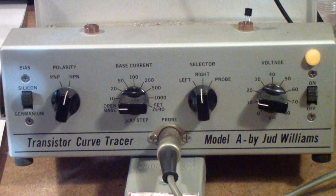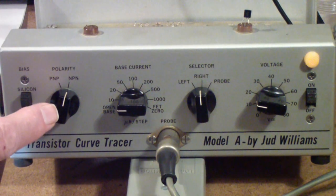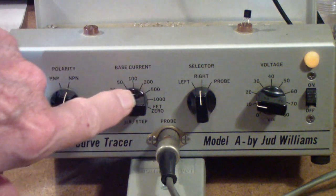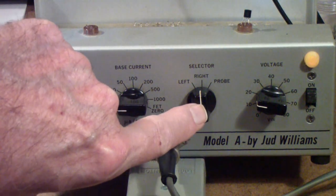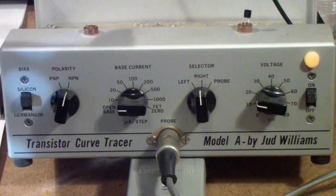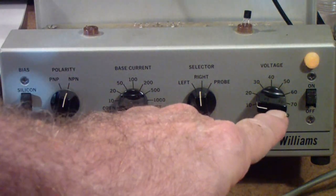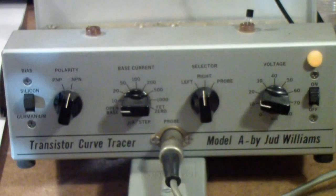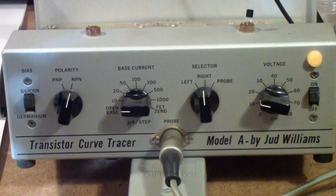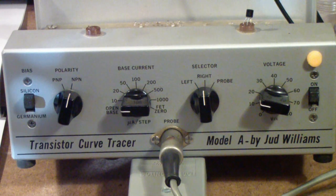Here is the front panel of the unit. You'll notice that on the left it has a silicon-germanium switch, and I'll talk about that again in a minute. Then a polarity switch to select between PNP and NPN. A base current selector that determines the steps, in other words the amount of base current per step. Then a switch that selects between the left, the right socket, or the probe which is down here in the middle. And on the right side is the collector voltage that you can set anywhere from near zero to a little over 80 volts collector to emitter voltage. On the far right is the on-off switch and the power light.